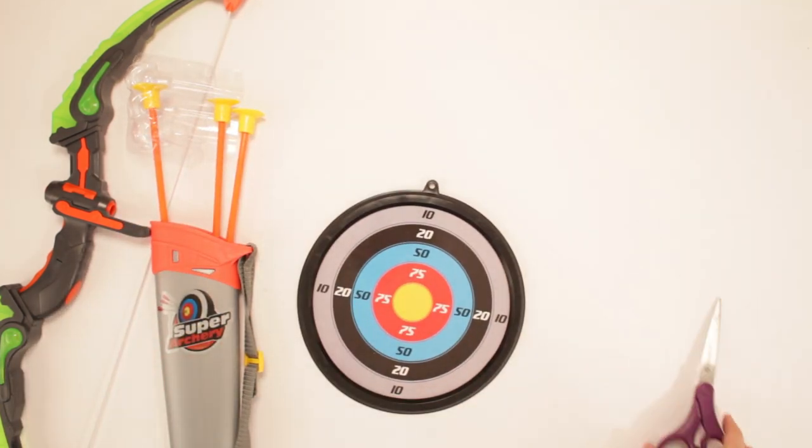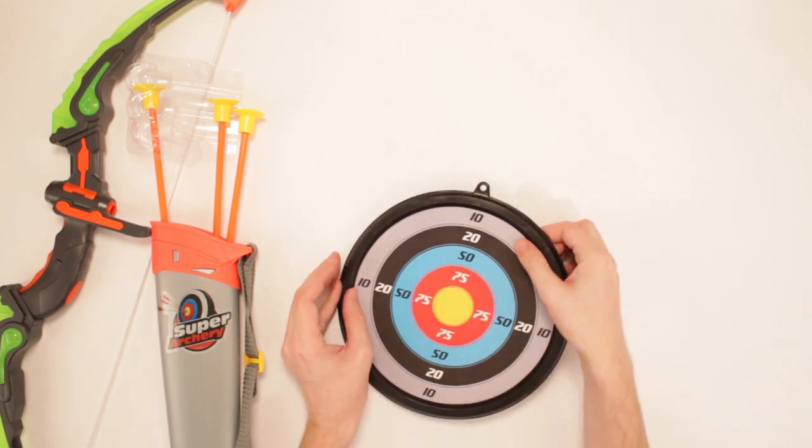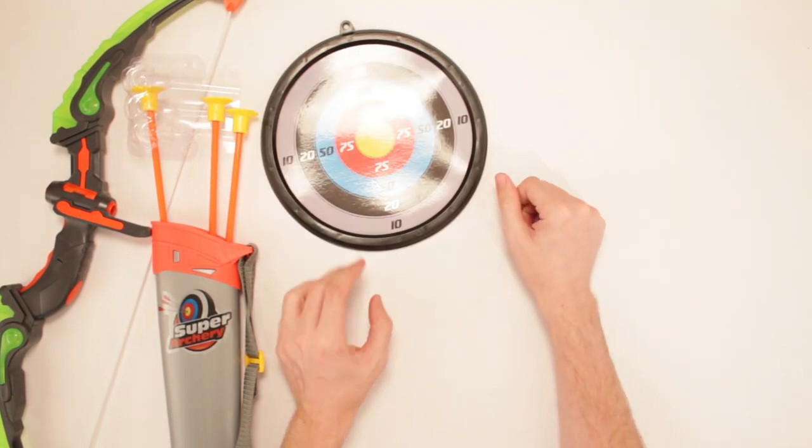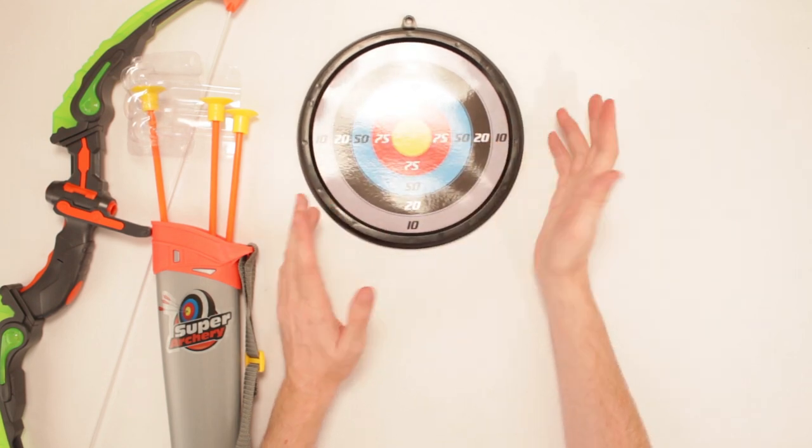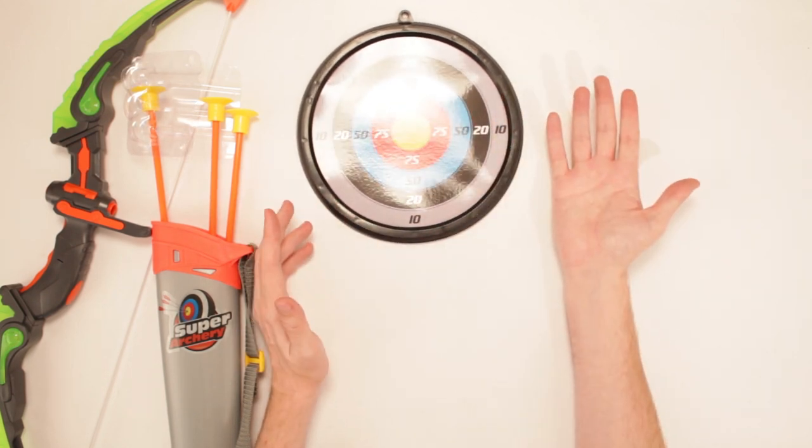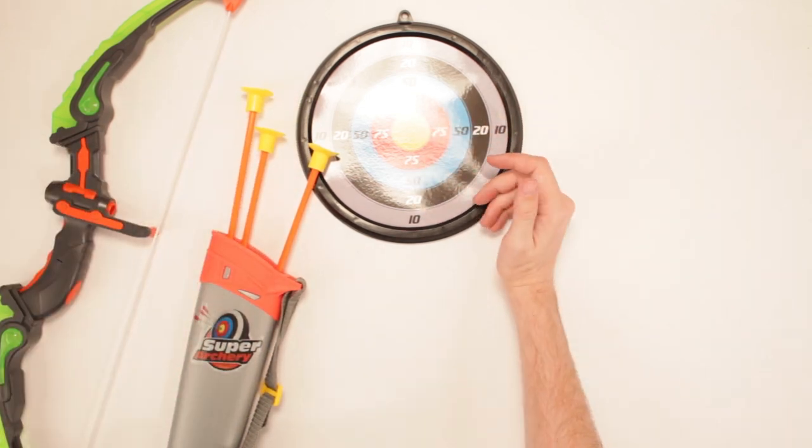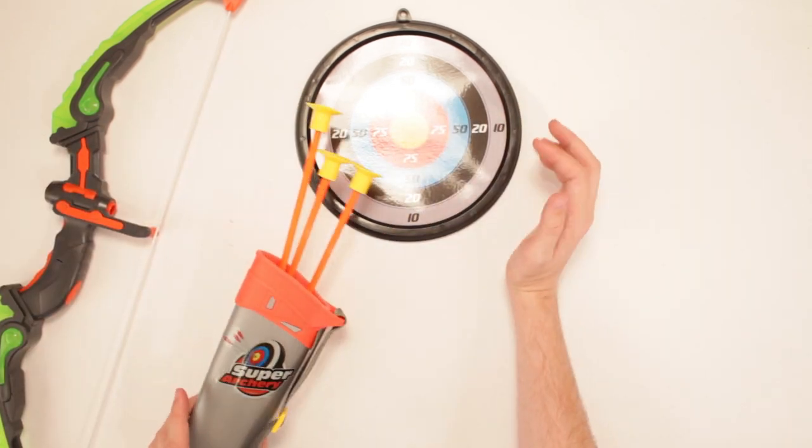Ooh, fancy. Alright. So we got our target. You could hang that thing anywhere. Even on a bathtub. So there's that. Highest points, I guess, are I guess a hundred, but it doesn't say it. So 75. I guess the bullseye could be anything. It could be three million. So you just have to write it in there.